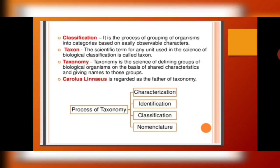Now, what is classification? After we have identified an organism, the next step is to classify it. Classification is the process of grouping organisms into specific categories based on easily observable characters. For example, if I put together a nursery student and a class 12 student, just by seeing the two you would be able to distinguish and put the smaller one into the nursery group and the taller one into the class 12 group. This is classification — dividing them into categories.